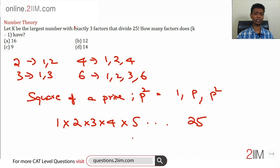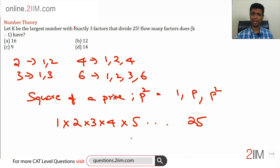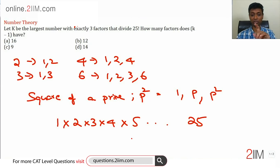If you take a very large prime like 103, it will not divide 25 factorial. What is the largest prime that divides 25 factorial? That is 23. But 23 divides 25 factorial only once, so we need a square of a prime — 23² won't work.